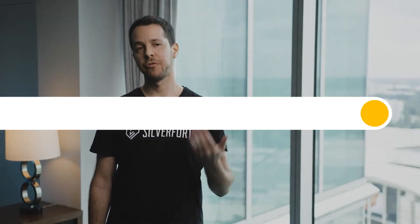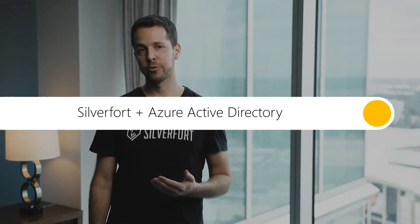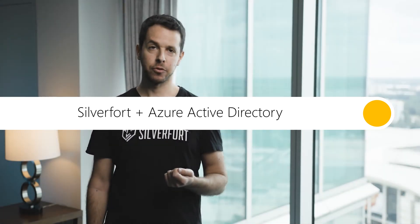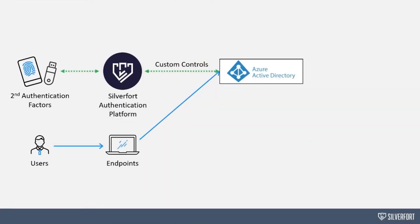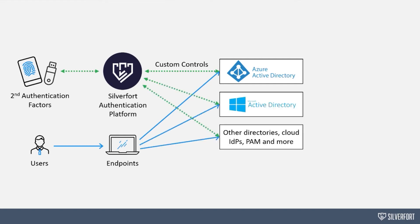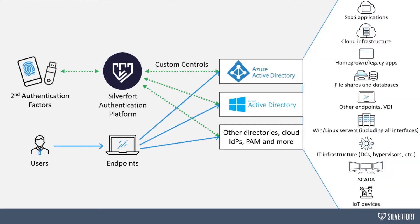We integrate with Azure Active Directory through a feature called Custom Controls — it's basically a way for Microsoft partners like us to influence conditional access policies in Azure AD in real-time. We also integrate with other directories, such as your traditional Active Directory, RADIUS, Privileged Access Management solutions, and others, so that we can basically deliver a unified policy across all of them.